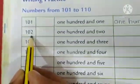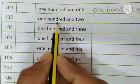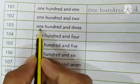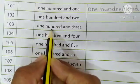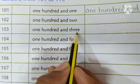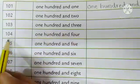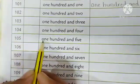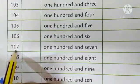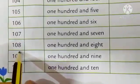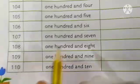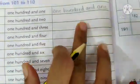Then, 102. Number name 102. 103. O, N, E, 1, H, U, N, D, R, E, D. 103. T, H, R, E, E, 3. Then, 104. 105. 106. 107. 108. 109. 110. Okay. You have to copy this in your textbook.